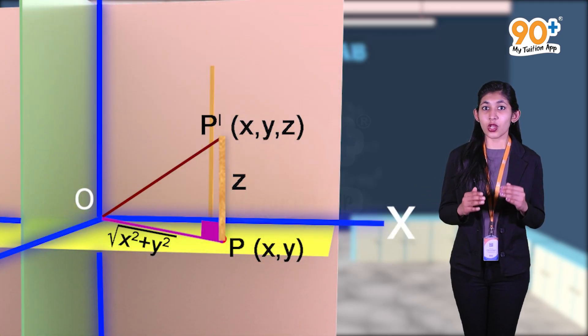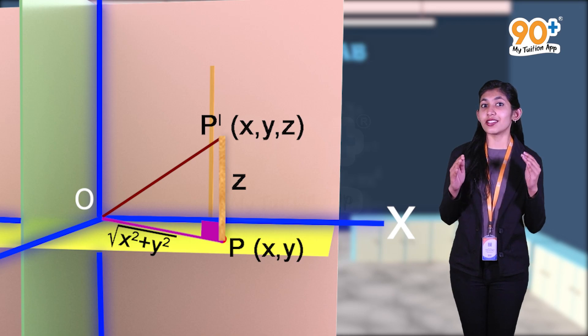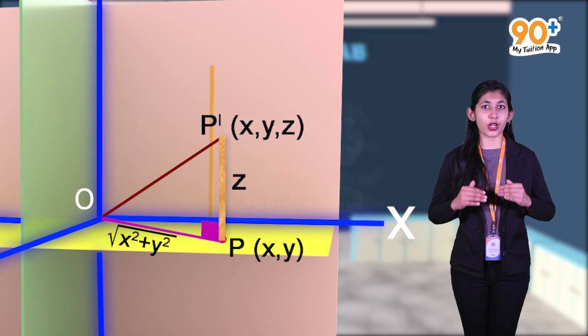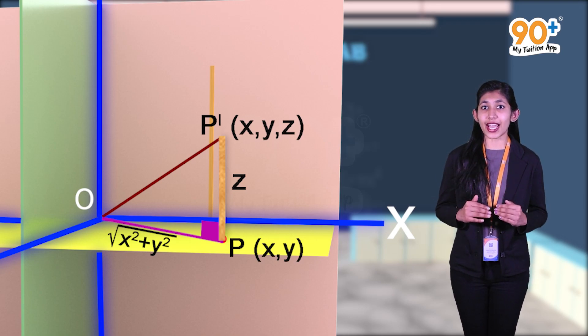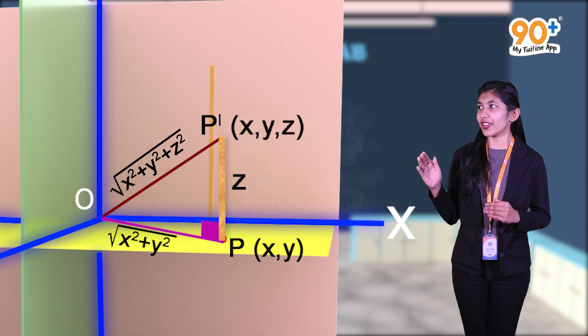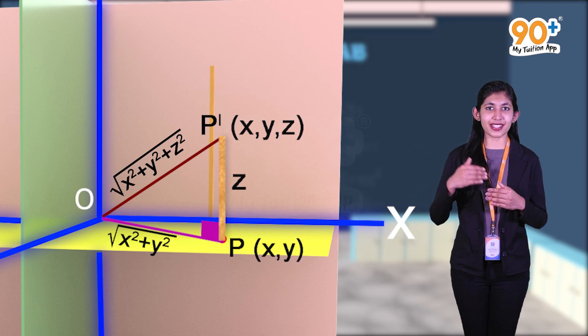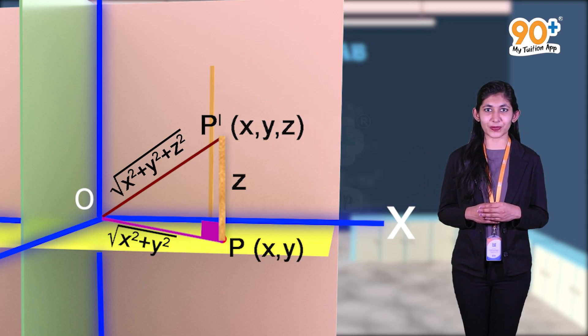That is, we got the distance from the origin to the point P-dash as the square root of x squared plus y squared plus z squared.